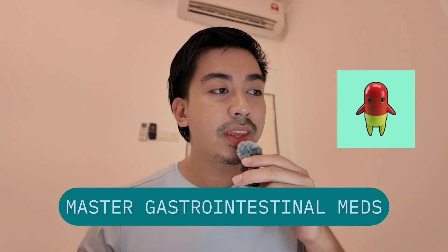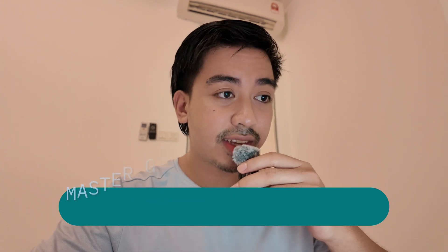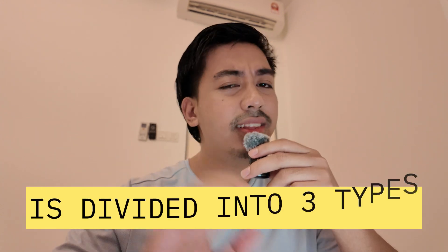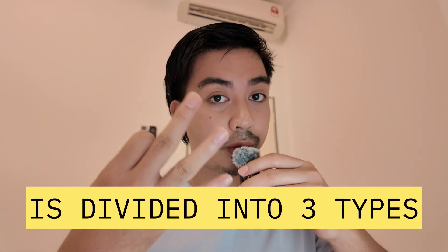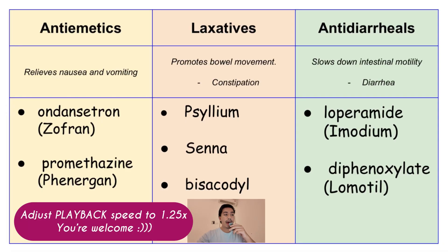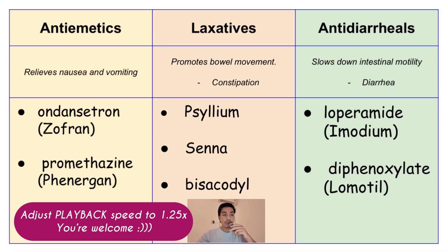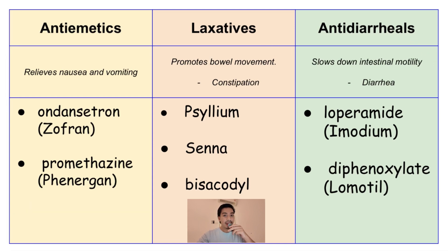Nurses, remember, gastrointestinal medications are divided into three types. We have the anti-emetics, which is in the yellow corner, the laxatives, which is in the orange corner, and the anti-diarrheals in the green corner. Let's discuss these one by one.